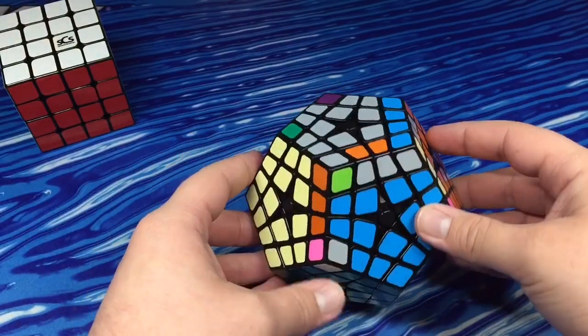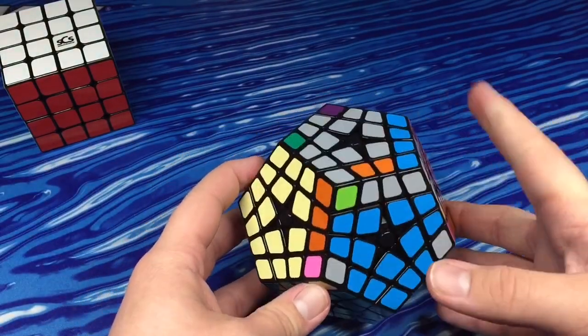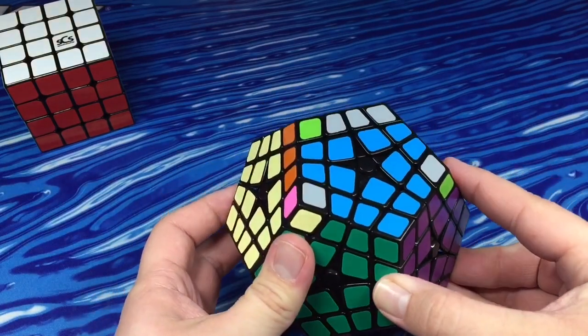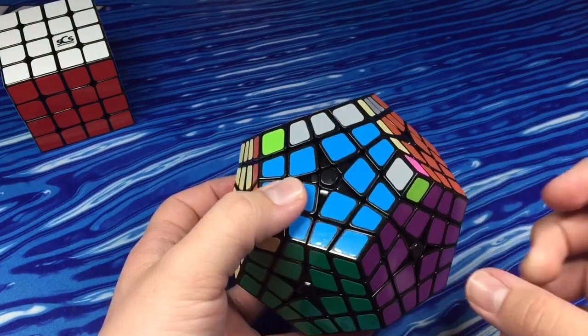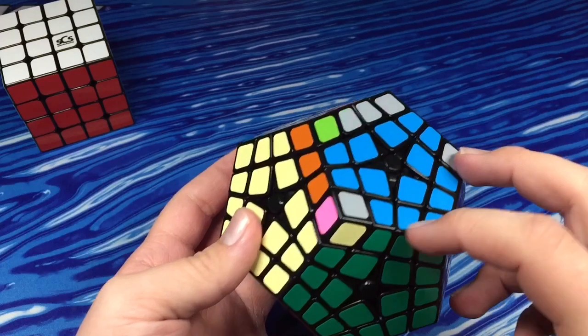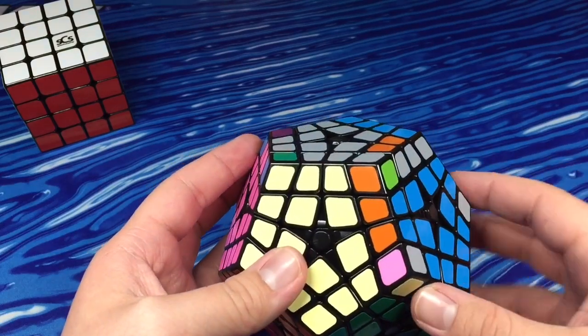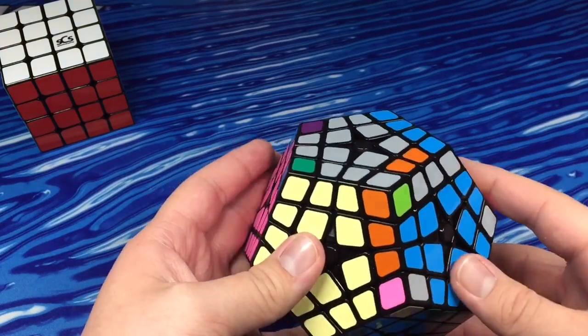So after you do the algorithm, your cube should look like it's messed up. You did not mess up. You would just have to go back and re-solve the pieces and when you get all the way done, it should be solved.